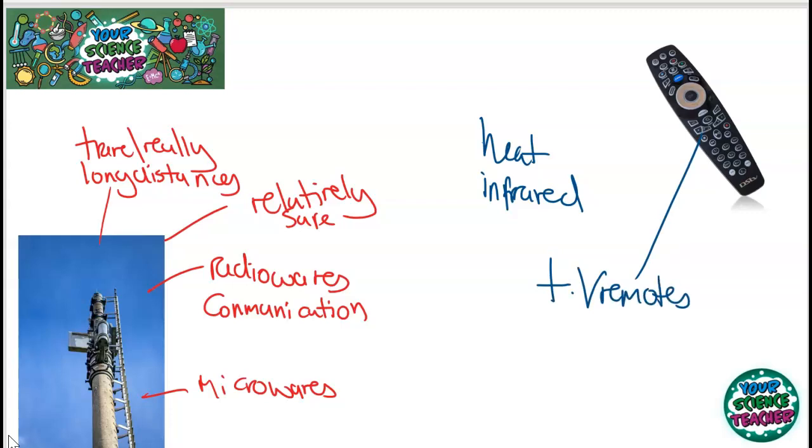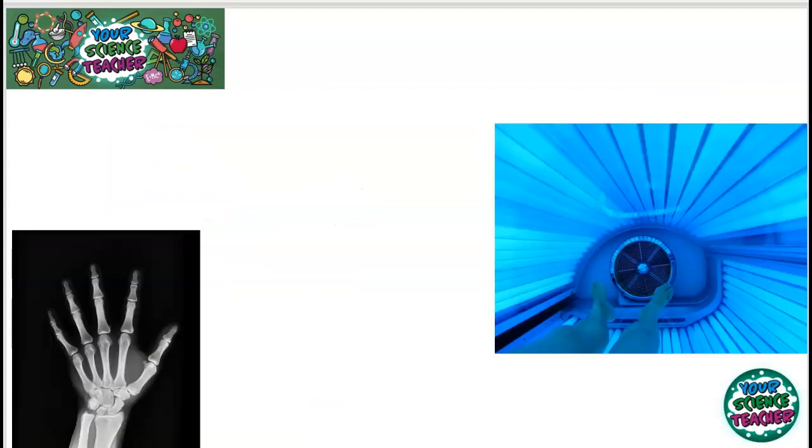What happens is your TV remote sends out an infrared wave and that is picked up by your box at home and it changes the channel for you. Also thermal imaging—if you've ever watched David Attenborough when he's filming wildlife at night, you'll notice he uses an infrared camera. This picks up the heat emitted by an animal and you can see it even in the dark.